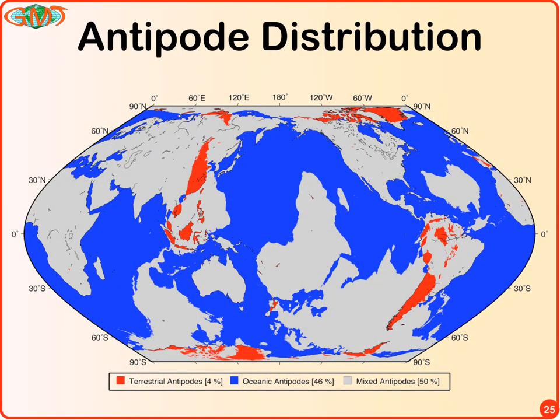The antipode distribution came from a GMT workshop challenge. If you're standing at some point and go straight down through the Earth's center to the other side — the antipode — is there land there too? It turns out only 4% of the Earth's surface has a terrestrial antipode. Hawaii is one of them — you can see Hawaii fits into the back-mapping of Southern Africa. The red area shows where the terrestrial antipodes are located.